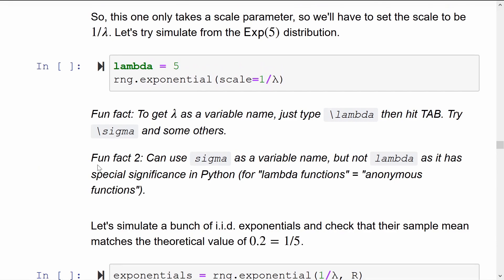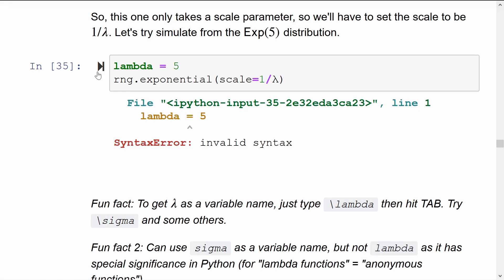Let's try to say lambda is the number five and then simulate from one divided by lambda. Error. Lambda is particularly unlucky. It happens to be a built-in function inside of Python. To be specific, it's a built-in keyword and it helps you define anonymous functions, which are aptly named lambda functions.